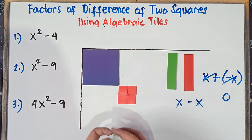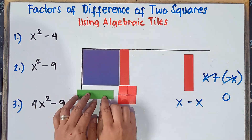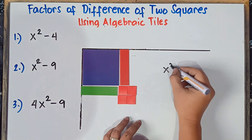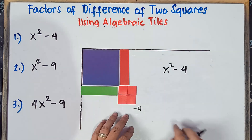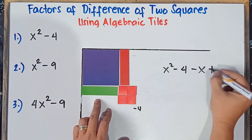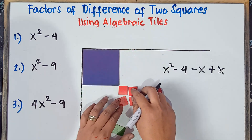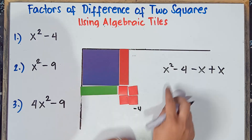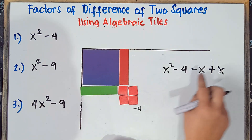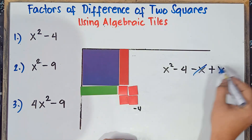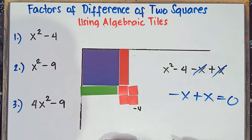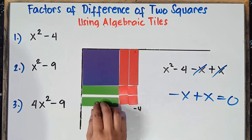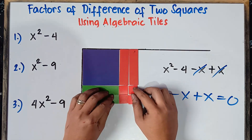So therefore, we can add negative x here and then positive x on the bottom part. The expression is still the same as x squared minus 4, because negative x plus x equals 0. We can add negative x and then positive x — and then another negative x and positive x. Now, can we form a rectangle? Yes, we can form a perfect rectangle.